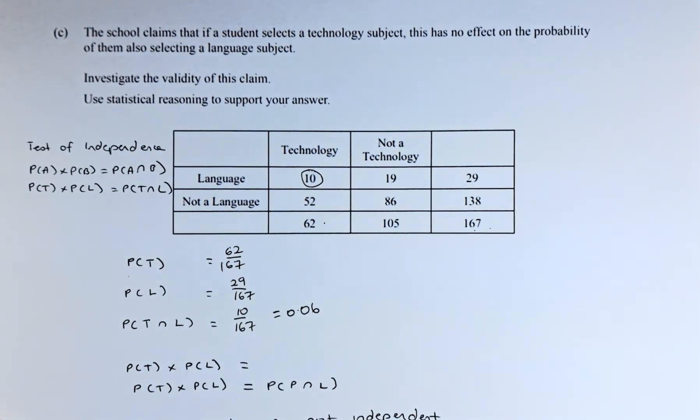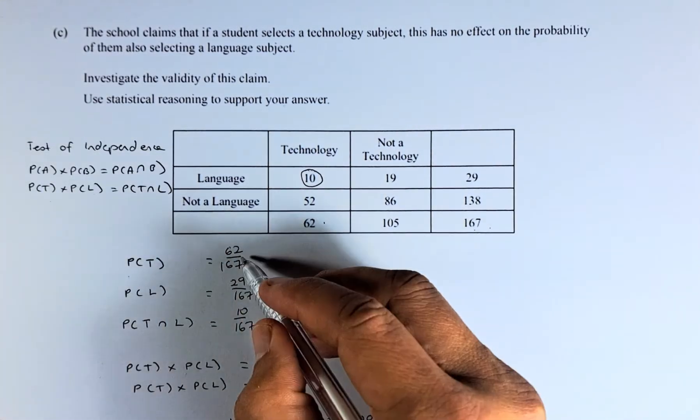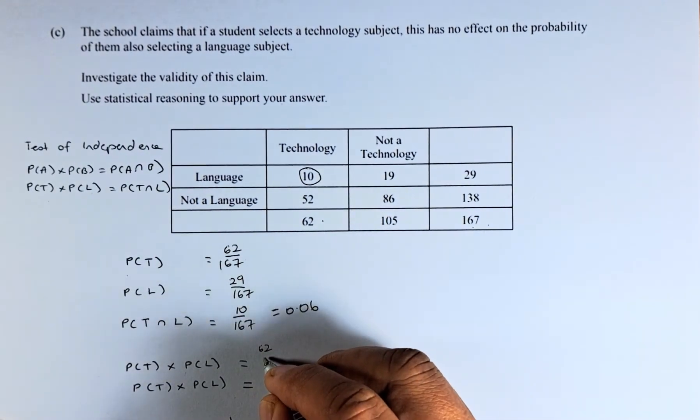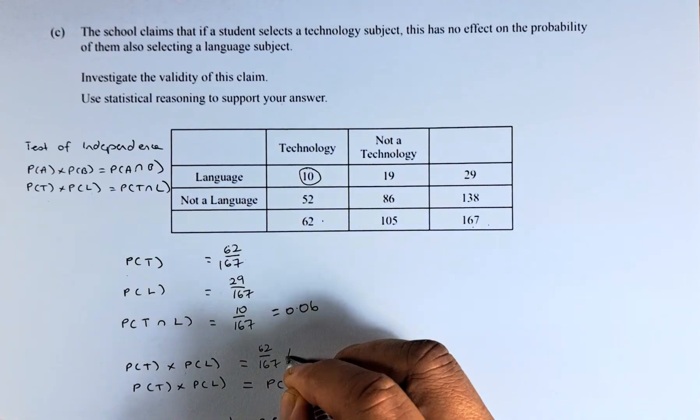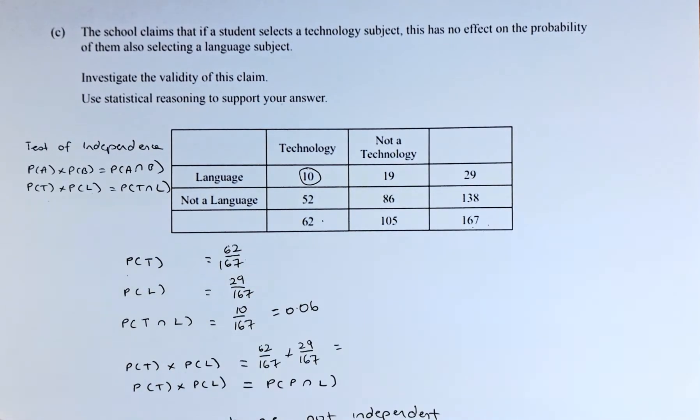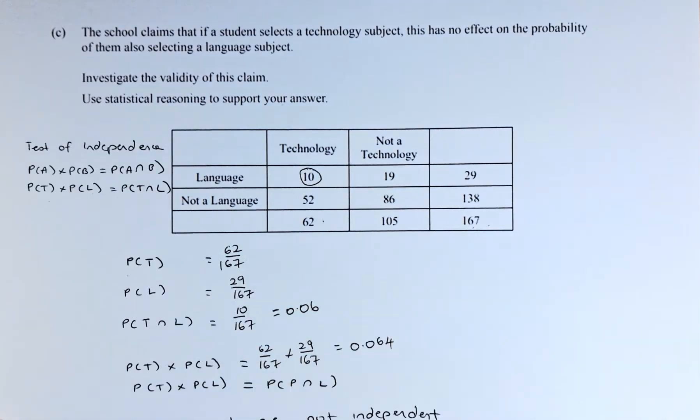Now, we need to calculate the probability of technology times probability of language. Technology is 62 over 167, and language is 29 over 167. Put in your calculator. If I am not wrong, the answer is going to be 0.064.